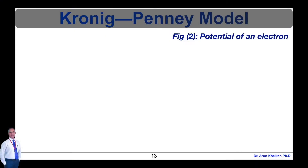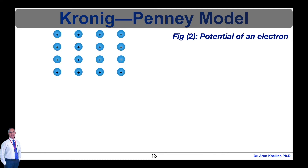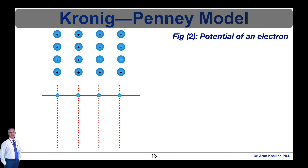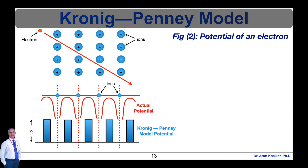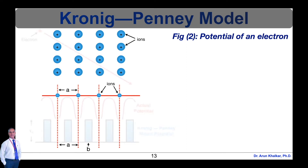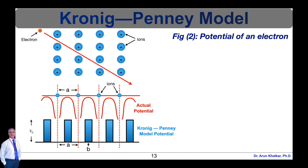The Kronig-Penney model, named after Ralph Kronig and William Penney, is a simple idealized quantum mechanical system that consists of a finite periodic array of rectangular potential barriers. The potential function is approximated by a rectangular potential as shown in this figure. The Kronig-Penney model is a strongly simplified one-dimensional quantum mechanical model of a crystal. Despite the simplifications, the electronic band structure obtained from this model shares many features with band structures that result from more sophisticated models.